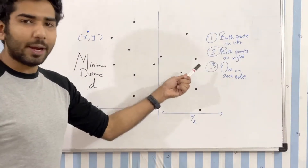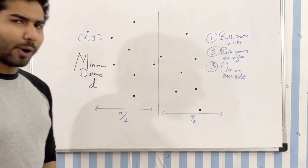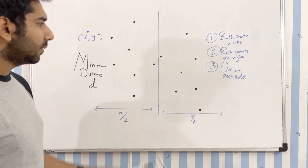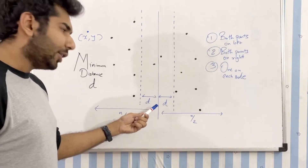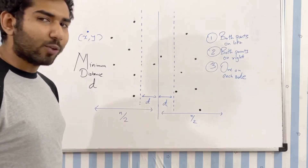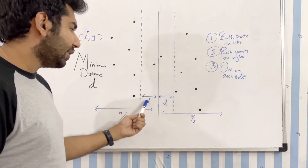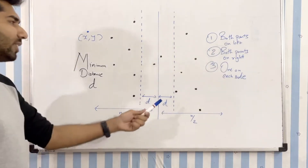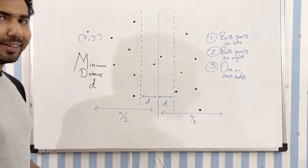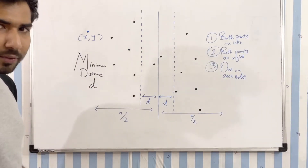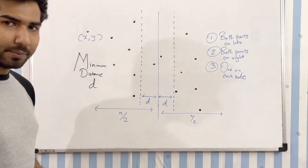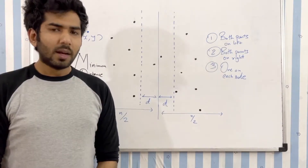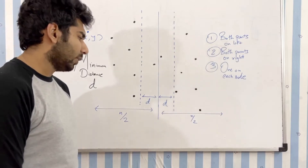Now we come to case three. Assume we got the minimum distance d from cases one and two. If the closest pair of points lies within case three, those two points have to lie within this range — d on the left side and d on the right side, so the pair has to lie within a 2d range. The reason is simple: if we take a point outside this range, the distance from that point to any other point will be either d or greater than d.